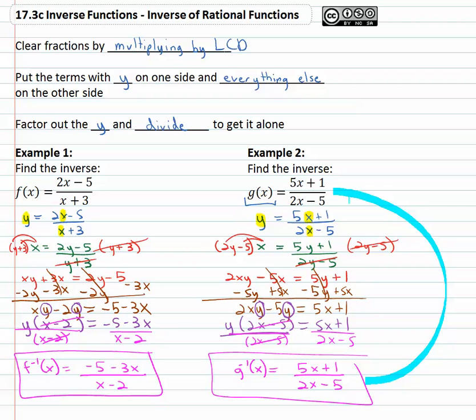Completely optional. What you do need to know is for the inverse of a rational function, you clear the fraction by multiplying by the LCD, put the terms with y on one side, everything else on the other side, and then factor out the y and divide to get it alone.